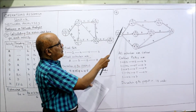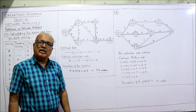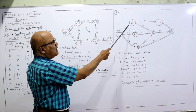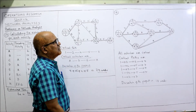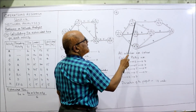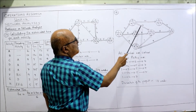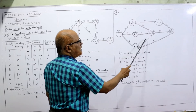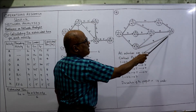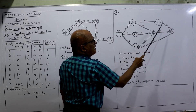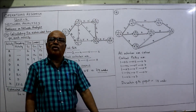Time estimates: 1→2 is 4, 1→3 is 7, 1→4 is 9. EST forward pass: first value is 0. Only one arrow merging: 0 + 4 = 4; 0 + 7 = 7; 0 + 9 = 9. One arrow merging: 4 + 10 = 14. Three arrows merging at node 5 — take maximum: 4 + 6 = 10, 7 + 3 = 10, 9 + 1 = 10, all equal 10. Three arrows merging at node 7: 14 + 4 = 18, 10 + 8 = 18, 9 + 9 = 18. Forward pass completed, EST = 18.